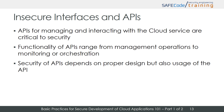In cloud computing, providers expose a set of APIs to their customers to manage and interact with the cloud service. Those APIs normally offer a wide range of functionality for management operations, monitoring, or orchestration. Security for such an API depends on the correct design of the API and proper usage by customers — following the provider's instructions and best practices. If the authentication and access control of the APIs is not implemented correctly, it is possible for attackers to abuse the APIs for their own purpose. Sometimes organizations or third parties use the basic APIs of a cloud service to implement their own services on top, creating a new API layer which needs to be secured as well as the underlying base layer.